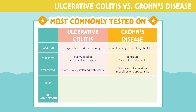Ulcerative colitis appears continuously inflamed with ulcers, where Crohn's disease appears as scattered inflammation with a cobblestone appearance. It's important to note that there's no cure for either condition. We want to educate patients on diet modifications such as decreased fiber, increased protein, increased calories, and increased fluid intake.